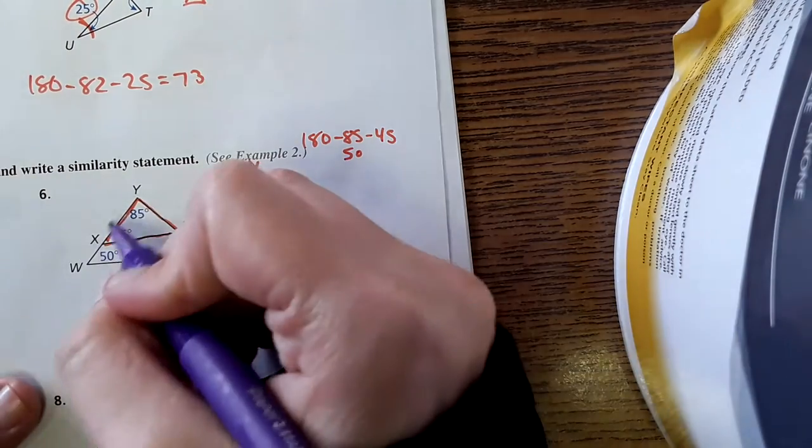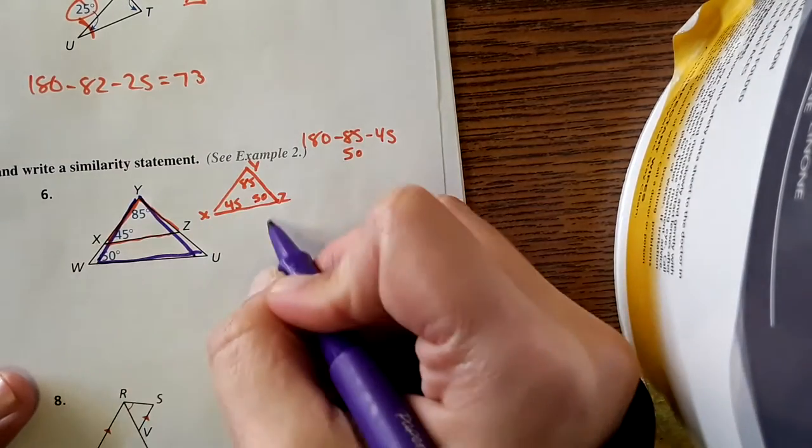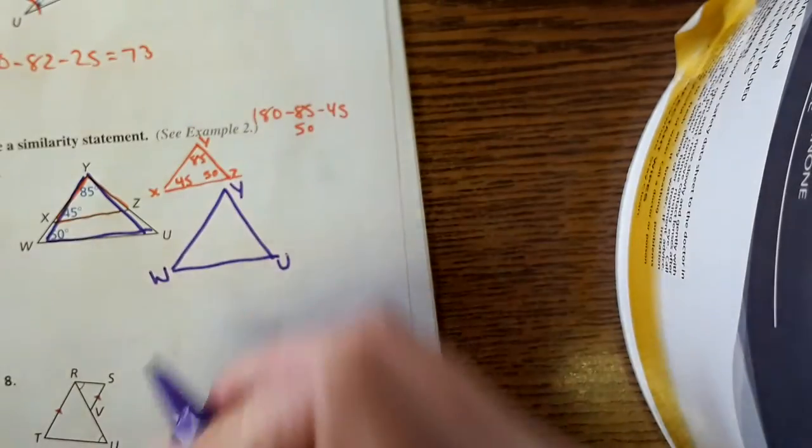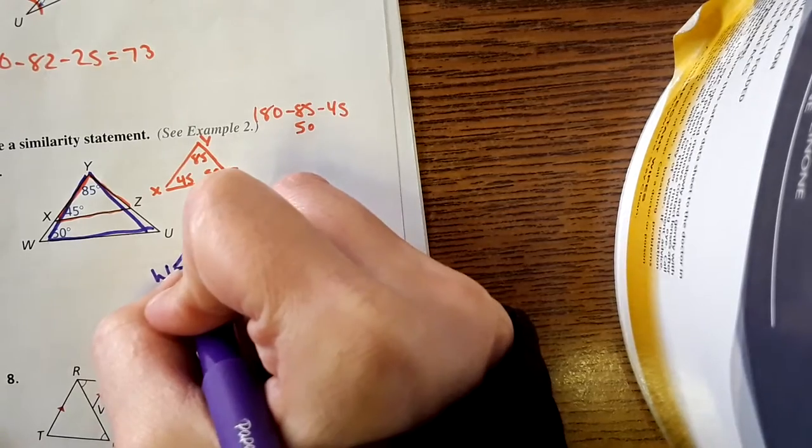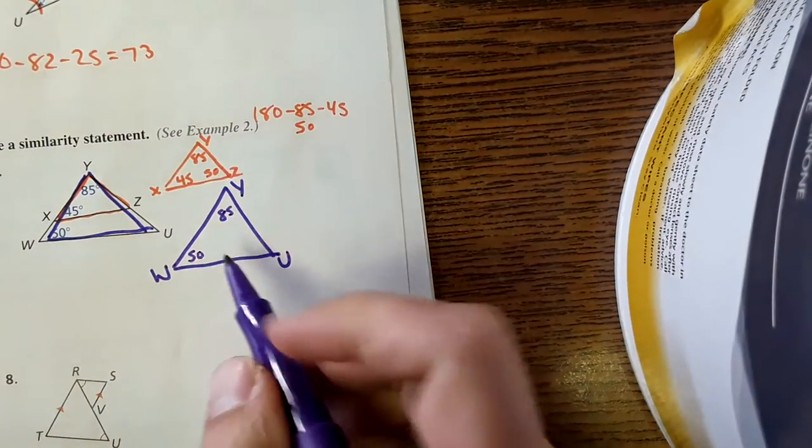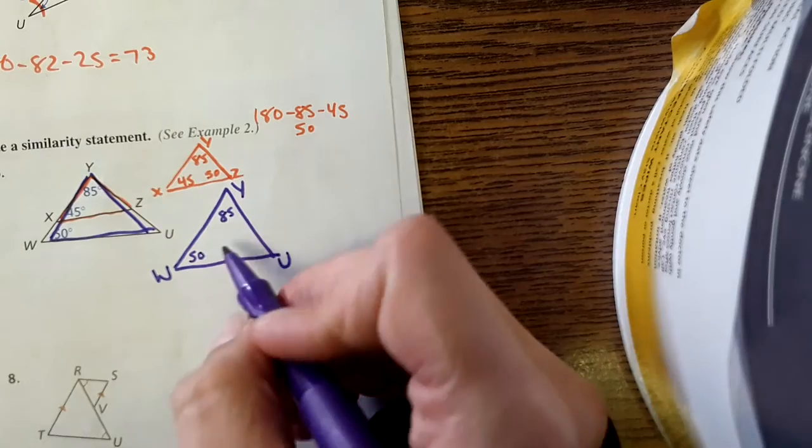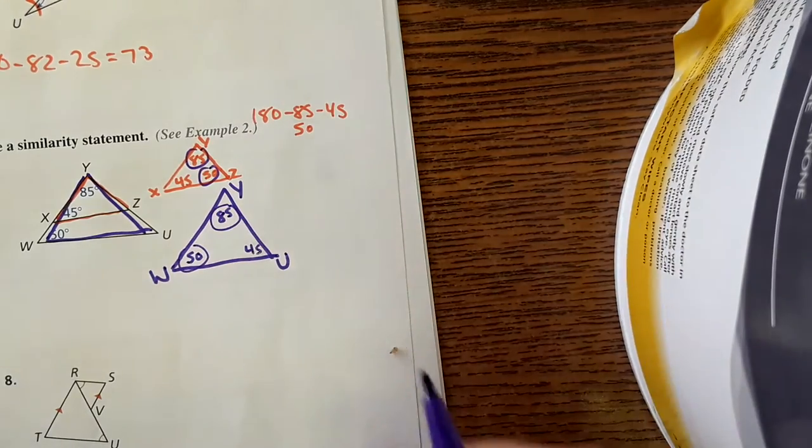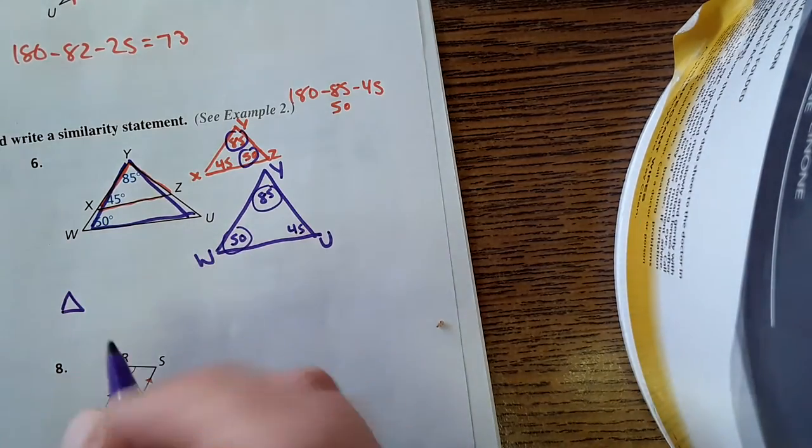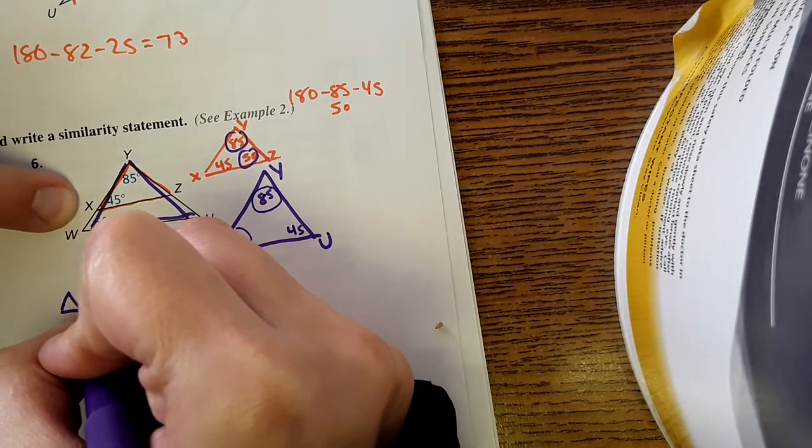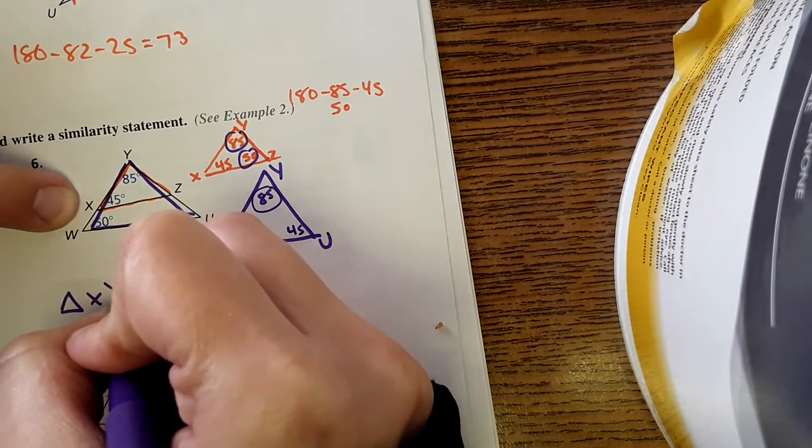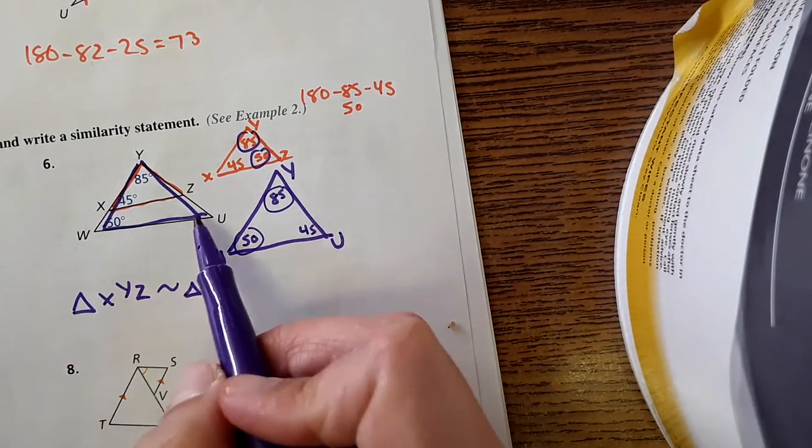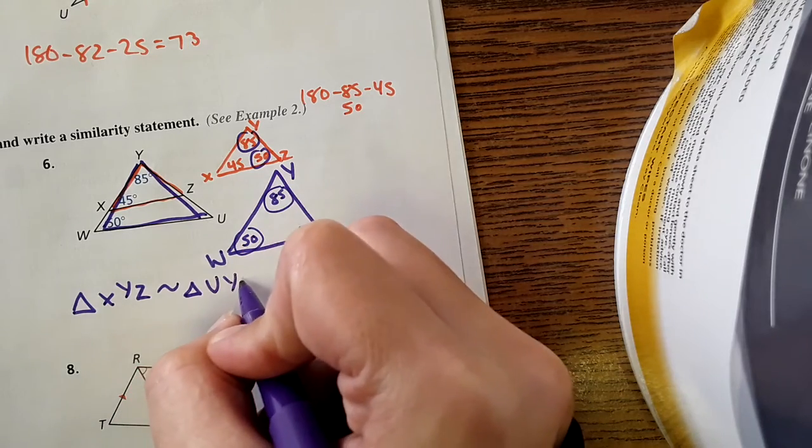Then, we have the larger triangle. Okay. Drawing that out. And this is W, Y, like that. This angle is 85. This is 50. And we have two matches. I could solve for this. This is going to be 45. But once I had the two matches, 85 and 50, yes, they are similar. So, the similarity statement would be then X, Y, Z is similar to triangle. And I started with the 45 degree angle, so I'm going to start with U here, Y, W.